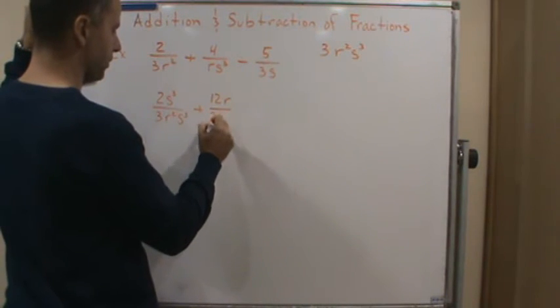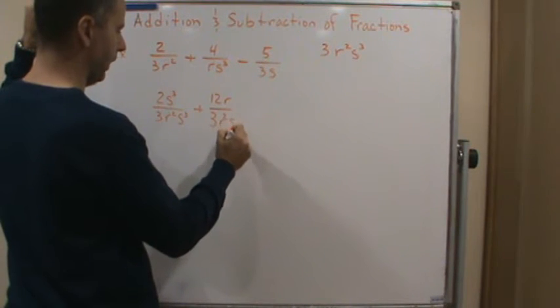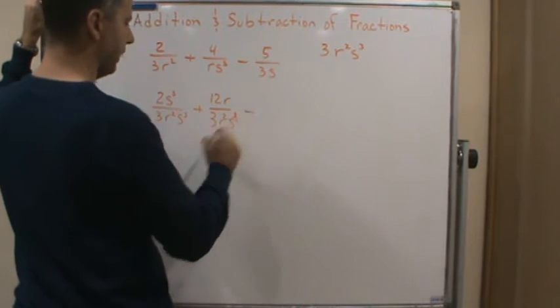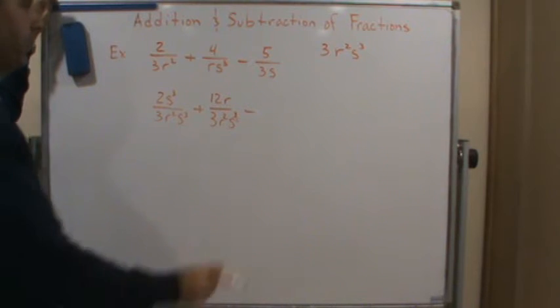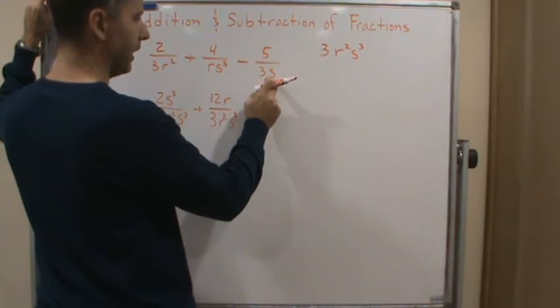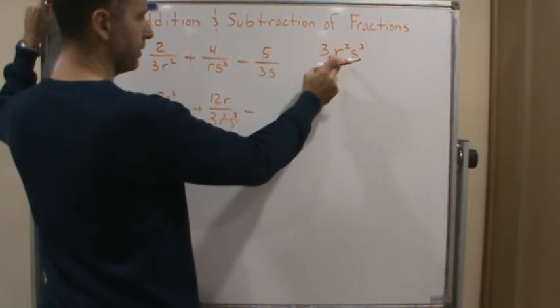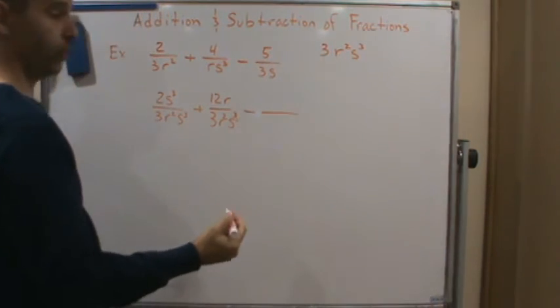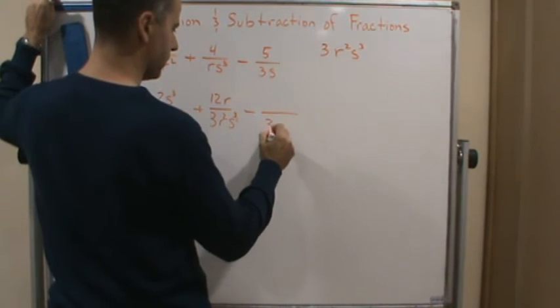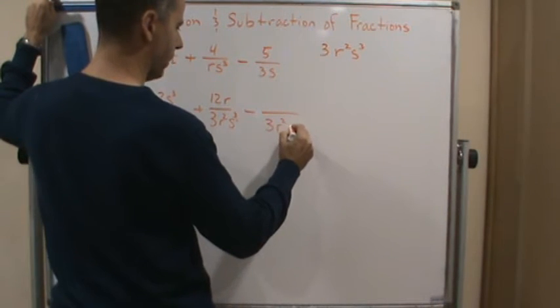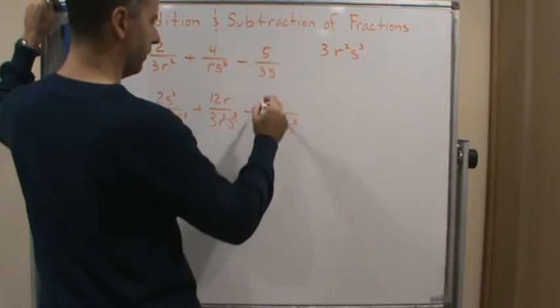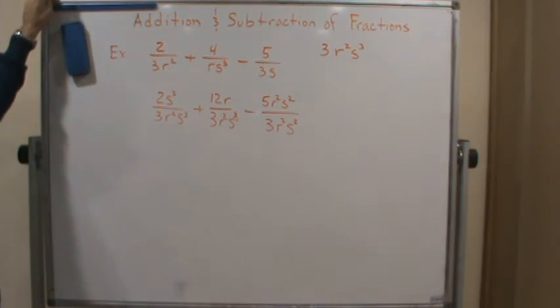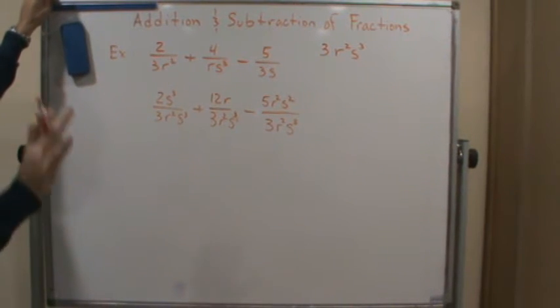And now we're going to subtract off this one, but what's missing? We've got the three and we've got an s, we're still missing r² and s². So we're going to multiply the top and the bottom by r²s², so that's going to give us 3r²s³ on the bottom and 5r²s² on the top. Okay, so all I did was follow those three steps.